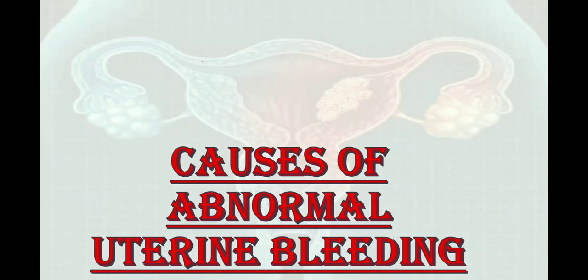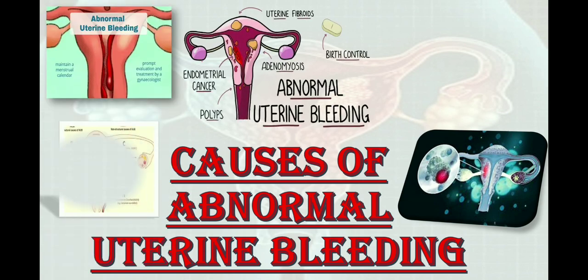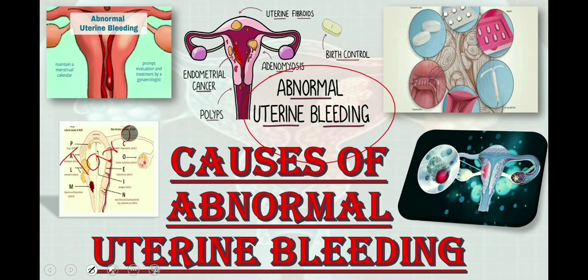Abnormal uterine bleeding is bleeding from the uterus that is longer than usual or that occurs at an irregular time. Bleeding may be heavier or lighter than usual and occurs often or randomly. There are several reasons behind abnormal uterine bleeding, and the best approach is to ask targeted questions from the patient to rule out the causes by keeping differential diagnosis in mind.